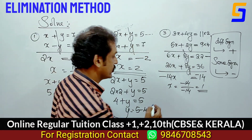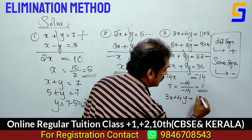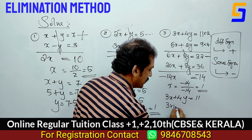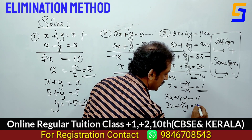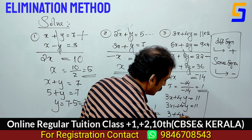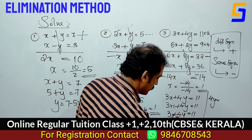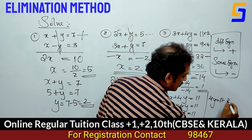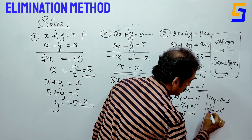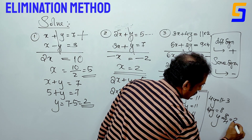Put x equals 1 into the equation 3x plus 4y equals 11. That is 3 into 1 plus 4y equals 11, or 3 plus 4y equals 11, or 4y equals 11 minus 3, or 4y equals 8. Then y equals 8 by 4, answer is 2.